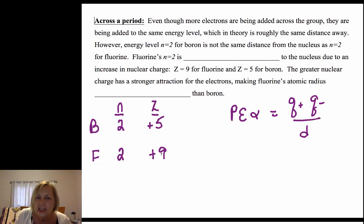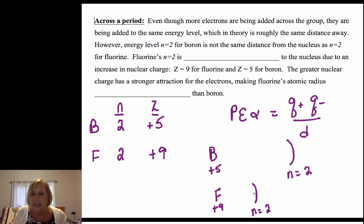Since fluorine has such a stronger positive charge—fluorine has got this +9, boron is only +5—n=2 for fluorine is going to be pulled in closer than n=2 for boron, because the electrons feel a stronger attraction to that nuclear charge.